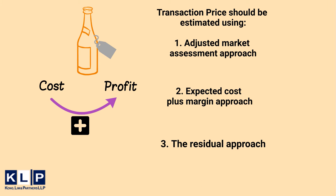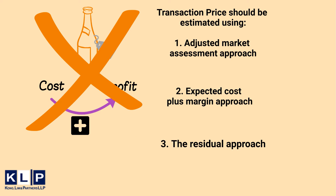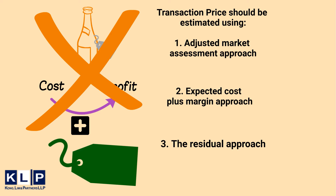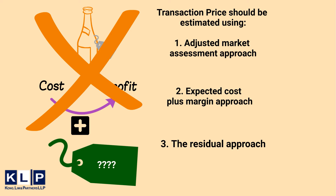Method 3: The residual approach. This is only used when you are unable to apply the other two methods. The residual approach is only allowed if the selling price of the good or service is highly variable or if the selling price is uncertain.